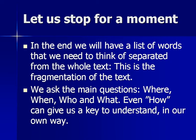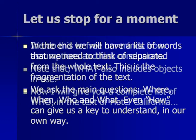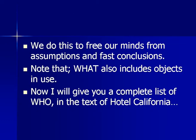Now let's stop and see. What we need to create are fragments — a list of words separated from the whole context of the text. In the end we will have a list of words to think about. We ask the main questions to get this list: where, when, who, and what. Sometimes even how can give us a key to understanding — but in our own way. It is not about finding the right answer; it is about finding the right answer for you. We do this fragmentation to free our minds from assumptions and very fast conclusions. Note that 'what' also includes objects in use.